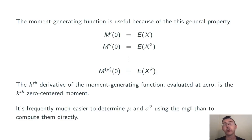This is helpful because it's frequently much easier to determine μ and σ squared, the mean and variance, using the moment generating function than to compute them directly. This is also true for skewness and kurtosis.